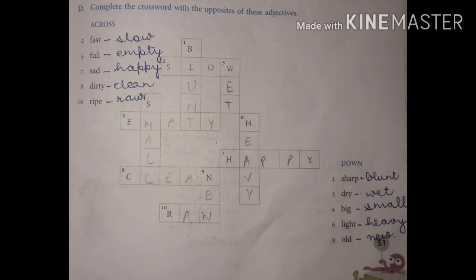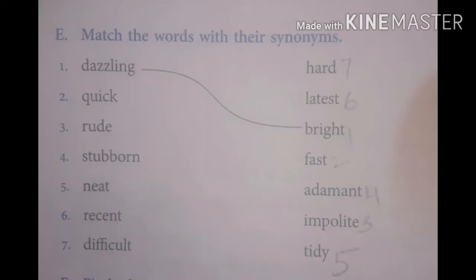Match the words with their synonyms. Synonyms means words with the same meaning. The first word is dazzling - the same word is bright. Second word is quick, that means fast. Third word is rude, that means impolite.